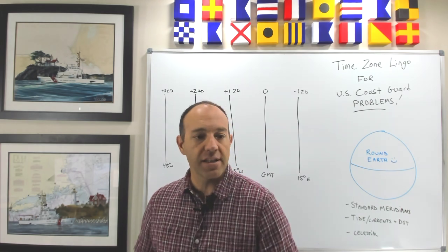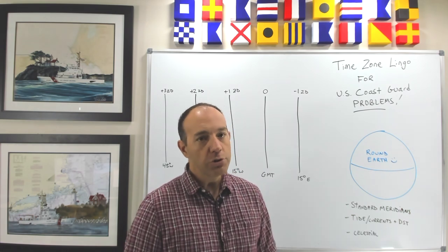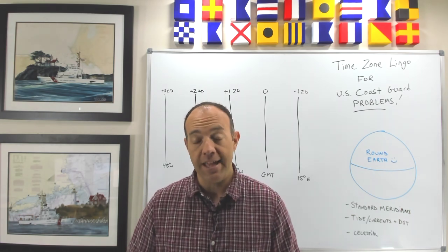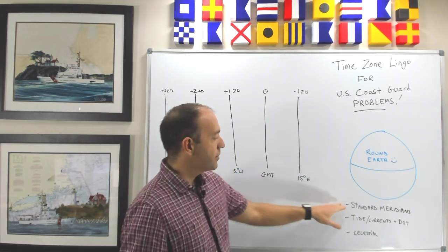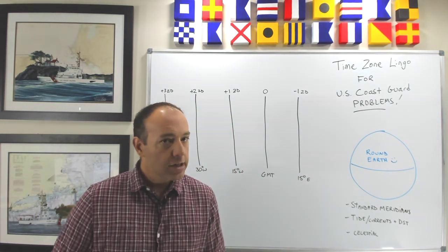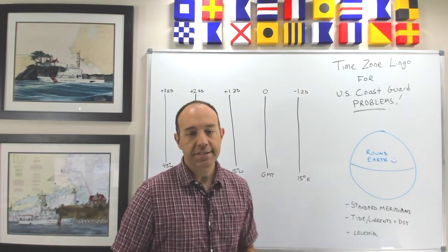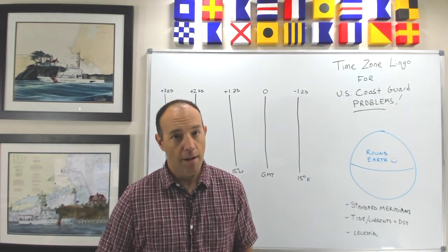Or you could see it showing up in tide and current problems which usually fall into navigation general or the navigation problems categories as well. Sometimes you'll see it elsewhere but those are the main two areas and there's a bit of confusion sometimes when you're studying for your exam about the lingo that the Coast Guard uses. So we're gonna talk a little bit about standard meridians, tide and current lingo, and then finally celestial lingo for Coast Guard problems specifically.